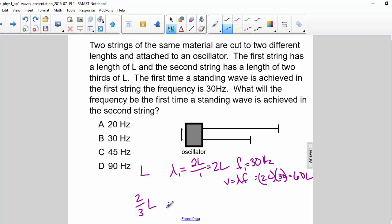Now for the second string, the first time would be 2 times L, which is two-thirds L, over 1, so that is 4L over 3. And now to find the frequency,